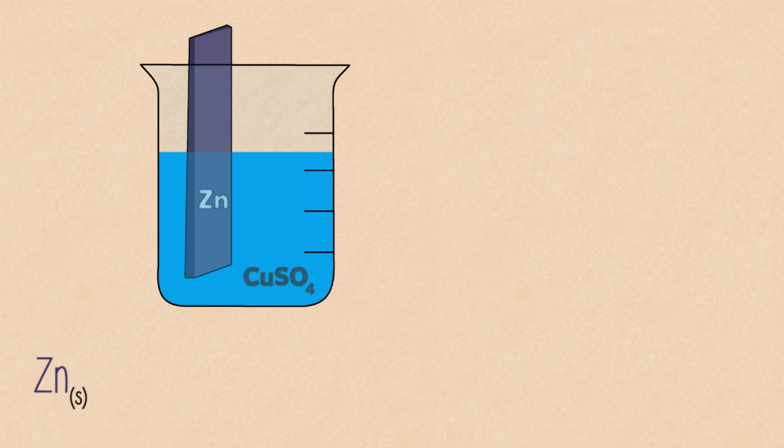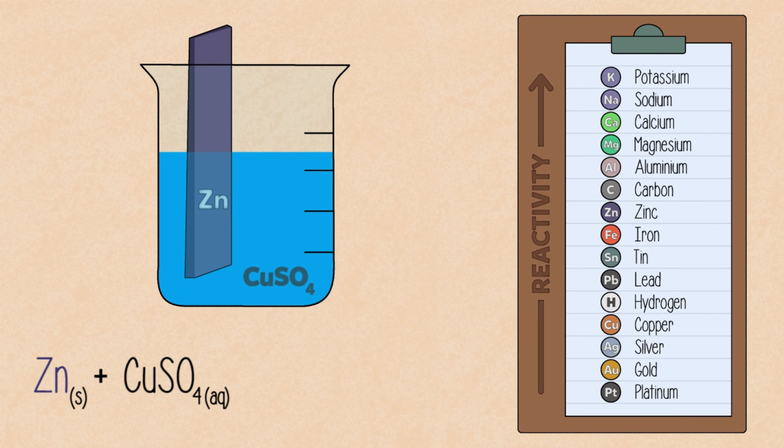Here is an example. When we add a strip of zinc to an aqueous solution of copper sulfate, we can see from the reactivity series that zinc is more reactive than copper and can therefore displace copper in copper sulfate. We can see this happening over time. The bright blue copper sulfate solution gradually turns into colorless zinc sulfate, and copper metal begins to deposit on the zinc strip.